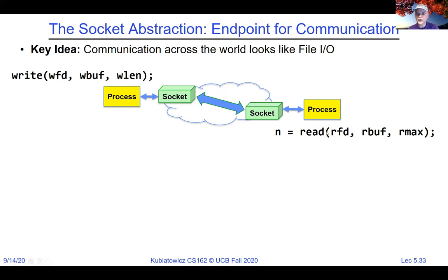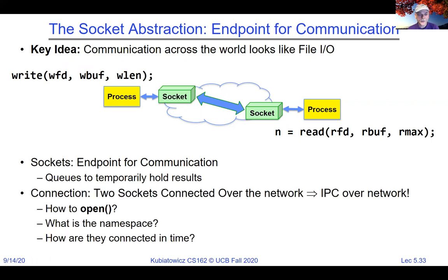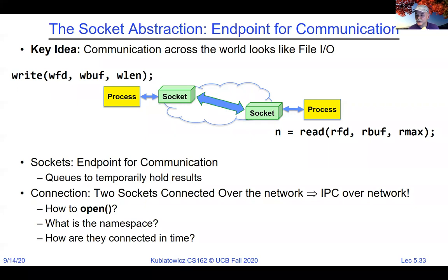Just as with pipes, if we go to read on one side and there's no data, that process gets put to sleep until the data shows up. Sockets are endpoints for communication with queues to hold results. Two sockets connecting over the network gives you inter-process communication over the network. There are many types of sockets. Not all pipes are sockets — the native pipe implementation on many Unix distributions is not actually the socket implementation. The difference between port and socket: a port describes a unique communication, while a socket is a data structure including a queue.